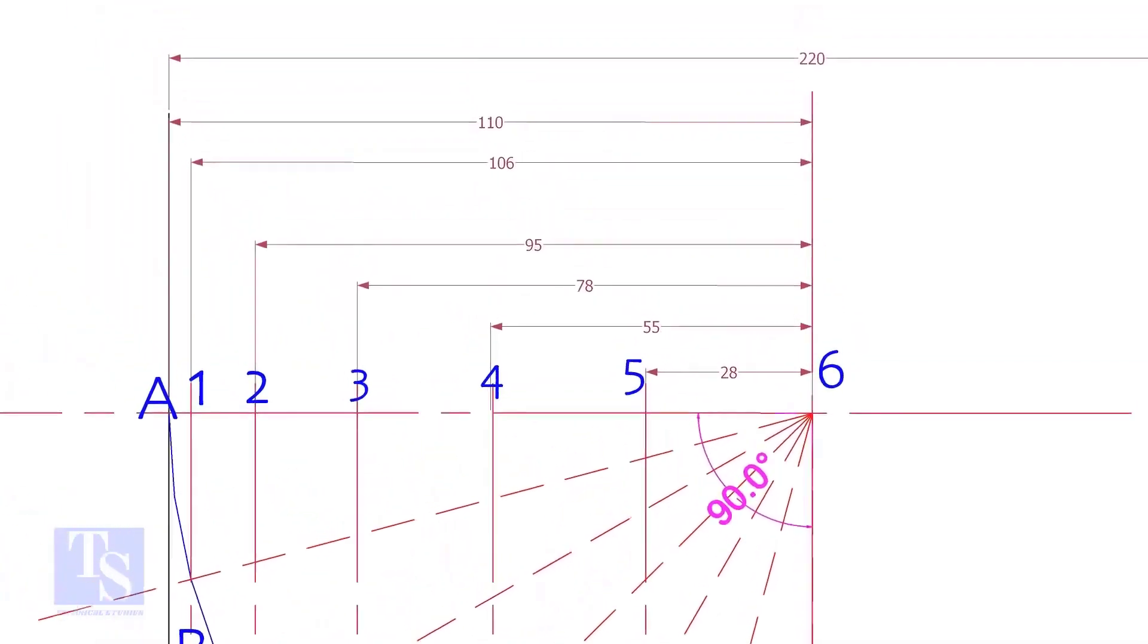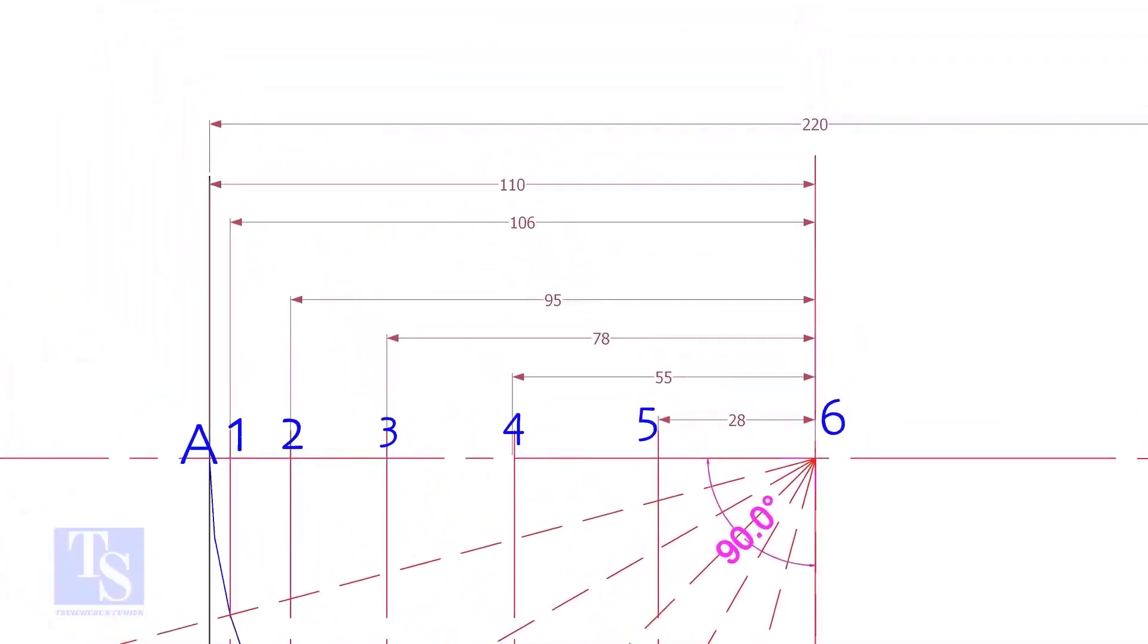You can either mark the RF pad on a plate or on a pipe, as per given in the drawing. In both cases, marking method is the same.